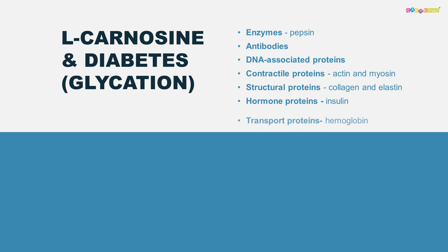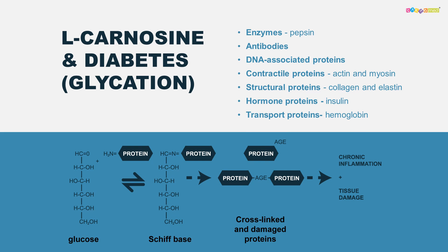Now let's move to diabetes — a disease where we observe high blood sugar levels. Exposure to chronic hyperglycemia may result in microvascular complications in the retina, kidneys, and peripheral nervous system. To better understand the connection between L-carnosine and diabetes, we must go through a process called glycation. Glycation is a chemical process happening every second throughout our body — right now, molecules of sugars are attaching to proteins.